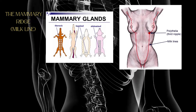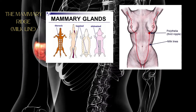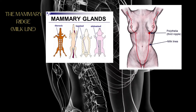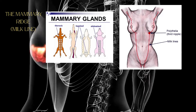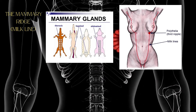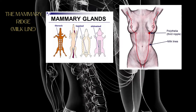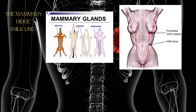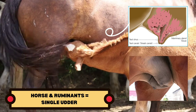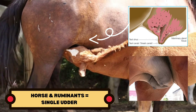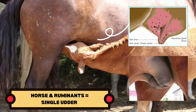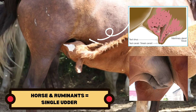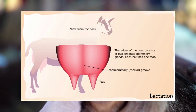For humans, apes, and elephants, they have paired mammary glands that develop from the thoracic portion of the mammary ridges. For the cow, mare, ewe, and goat, they have mammary glands that develop from the inguinal region of the mammary ridge. In ruminants and horses, individual glands are associated so closely to one another that they are commonly referred to as a single udder.